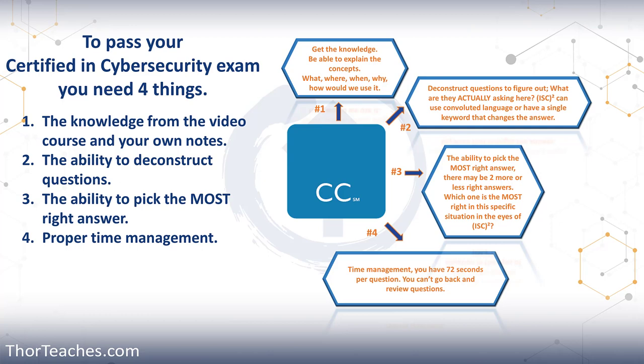Now let's talk about how to approach the actual questions. Read the entire question — take the time you need to completely read it, probably read it twice — and then deconstruct it. What are they really asking? You need to find the keywords and you need to find the indicators. Indicators are: most, best, least, can, always. And then the keywords are what is this question actually about.